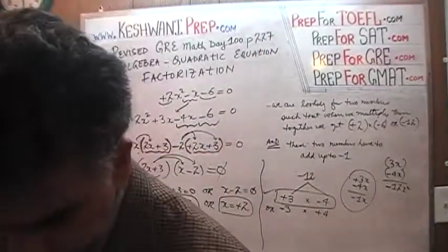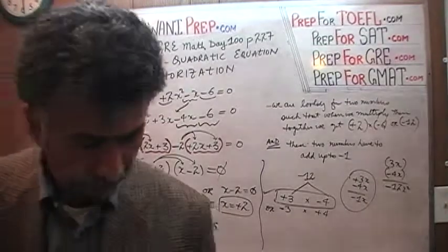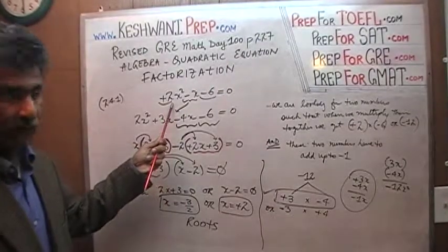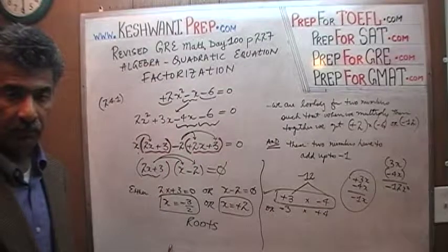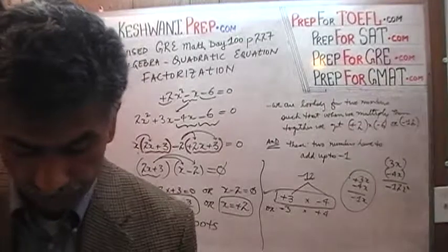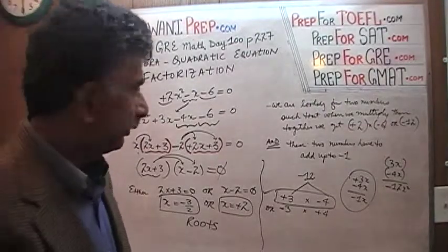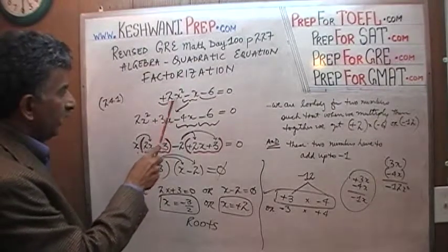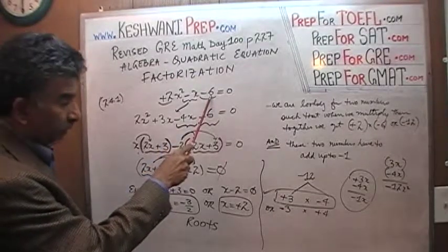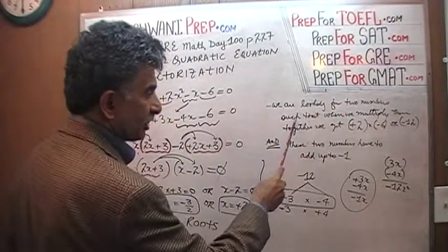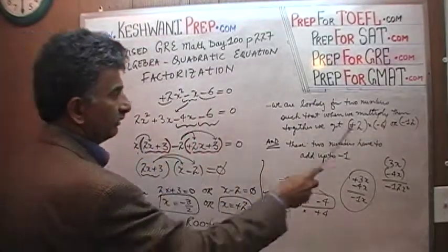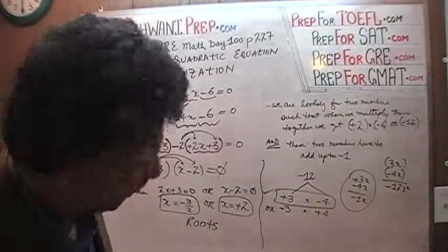What you see on the blackboard is what we did yesterday — problem number 2.4.1 at the bottom of page 226. We used the method of factorization, as opposed to the quadratic formula, to find the solutions. We are going to use the same method today. We look for two numbers which, when multiplied, give us positive 2 times negative 6, which is negative 12.